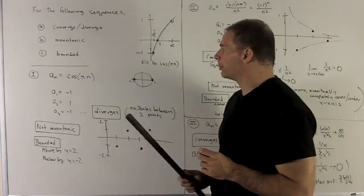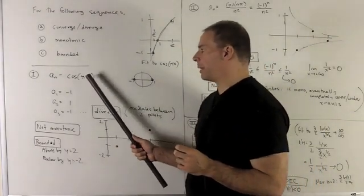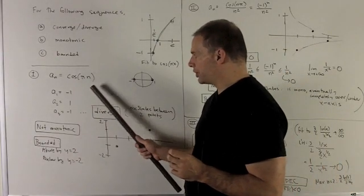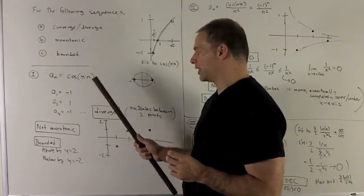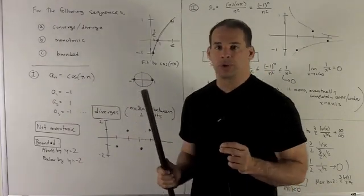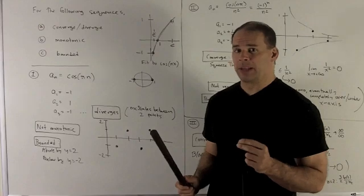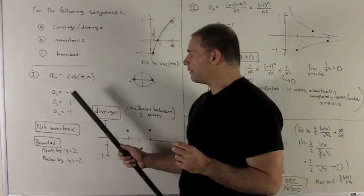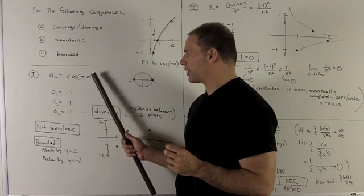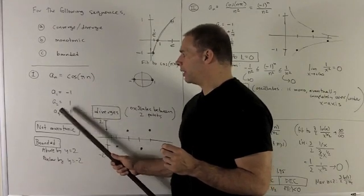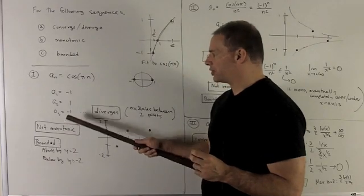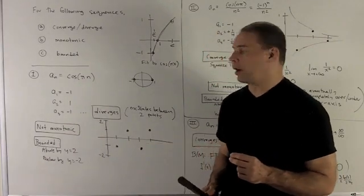First example: a_n = cos(πn). Now, we can fit a perfectly good function to cos(πn) — if I put x in here, cos(πx) — but that's probably not going to be the best approach. Let's see what happens if we plot the first few points. I put 1 in here, I get cos(π), which is −1. Put in 2, I get cos(2π), which is 1. Put in 3, I get cos(3π), which is −1. We notice this thing is just going to bounce back and forth between −1 and 1.